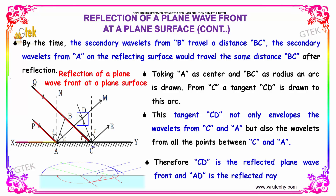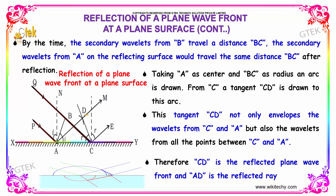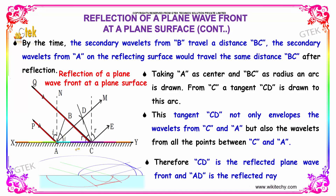Draw a tangent CD. The tangent CD not only envelops the wavelet from C and A, but also the wavelets from all points between C and A. Therefore, CD is the reflected plane wavefront and AD is the reflected ray.